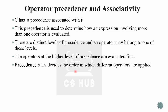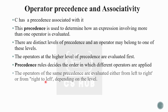Precedence rules decide the order in which different operators are applied. Precedence means how an expression involving more than one operator is evaluated. The operators of the same precedence are evaluated from left to right or from right to left depending on the level. When two operators of the same precedence appear, the order of evaluation is determined by associativity — either left to right or right to left.